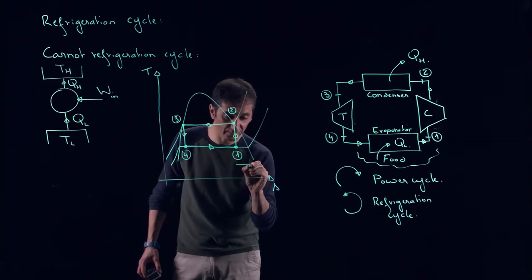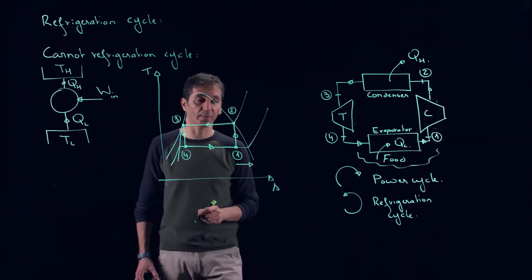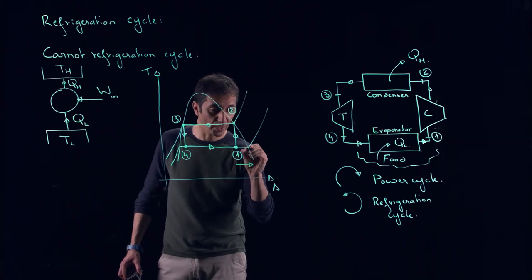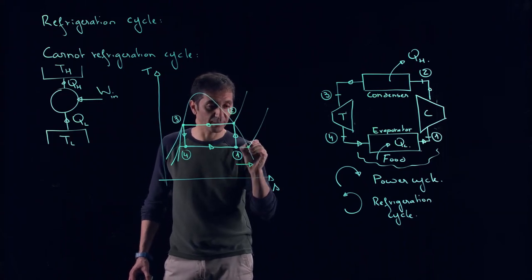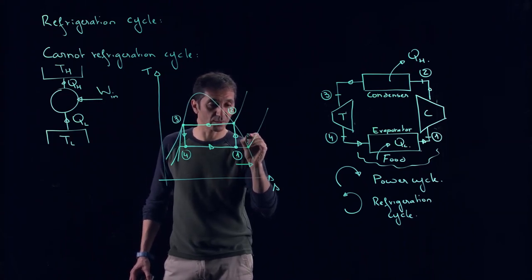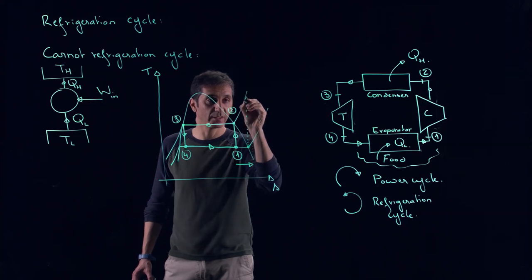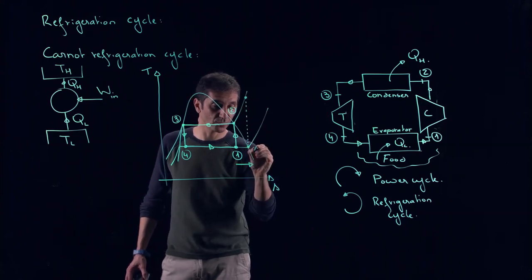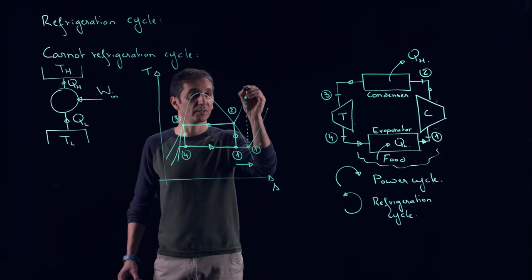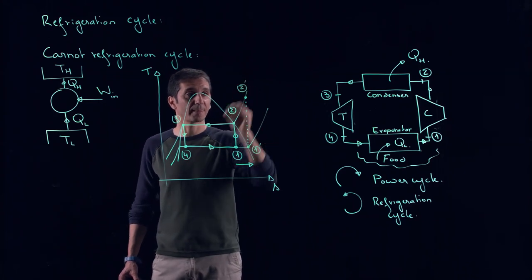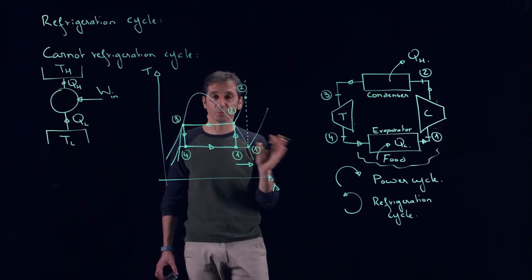So it's really problematic for us to have this point one in the mixture phase. The solution is that we will move it to the right. Our new state one will be here, and since the process remains isentropic, this will lead us to this new state two prime.